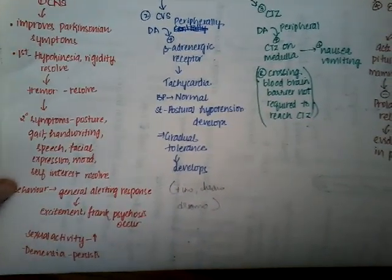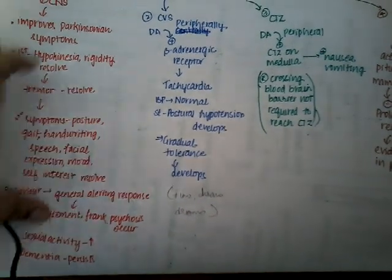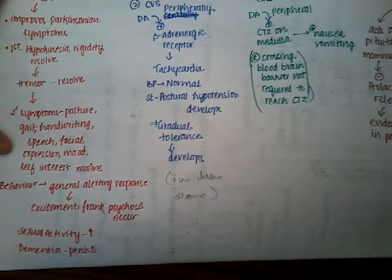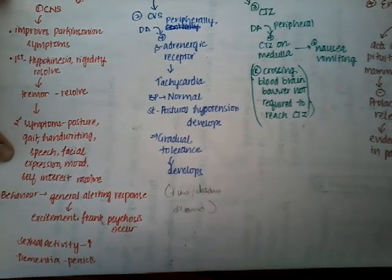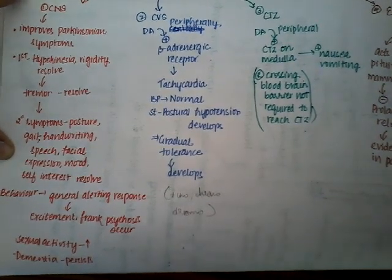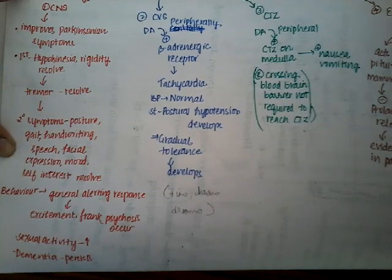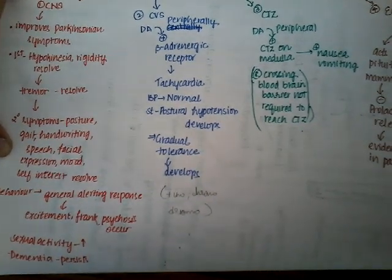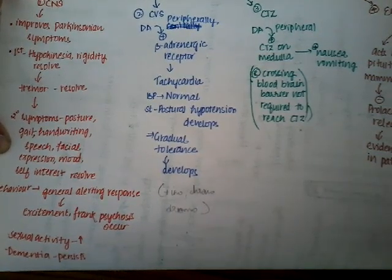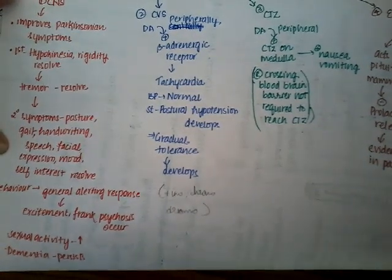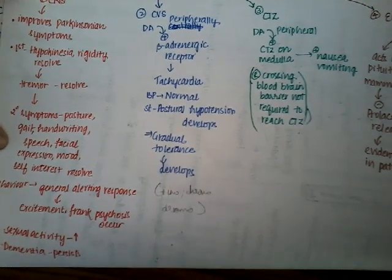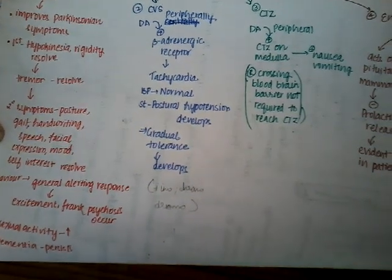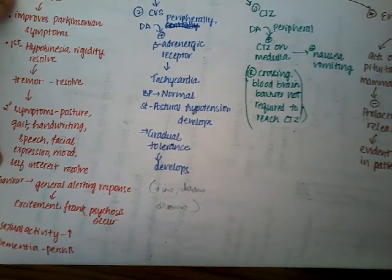The pharmacological actions of levodopa include CNS actions: it improves Parkinson's symptoms. Levodopa crosses the blood-brain barrier, gets converted into dopamine, and decreases Parkinson's symptoms. First, hypokinesia and rigidity resolve, then resting tremors resolve. Later, secondary symptoms like posture, gait, micrographia, speech, hypophonia, and masked facial expression also resolve.